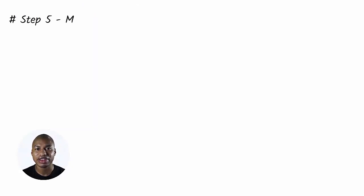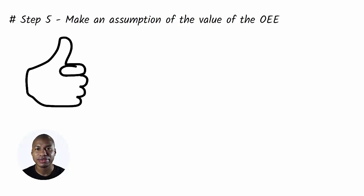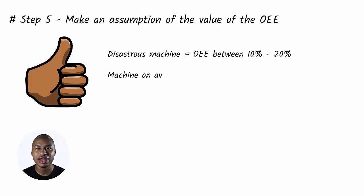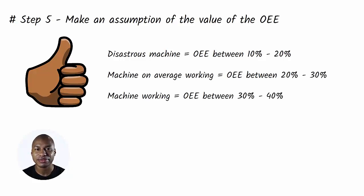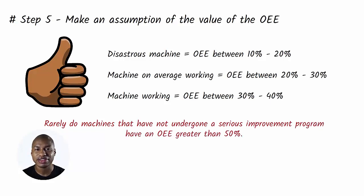Step 5. Make an assumption of the value of the OEE. At this point, you have many elements to hypothesize a range of possible OEE values. My rule of thumb is disastrous machine equals OEE between 10%-20%, machine on average working equals OEE between 20%-30%, machine working equals OEE between 30%-40%. It is only the first hypothesis. Rarely do machines that have not undergone a serious improvement program have an OEE greater than 50%.